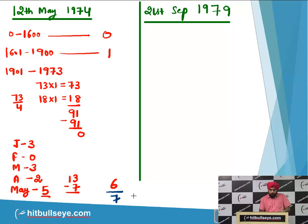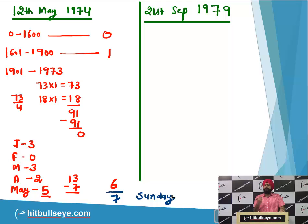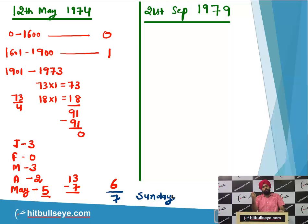Seven odd days means a complete week, so it becomes 0 odd days — meaning the day would be a Sunday. But the question tells us the day is Saturday, which means the examiner is moving one day late. When the real day is Sunday, he is calling it Saturday. Now let's solve for the other date: 21st September 1979.